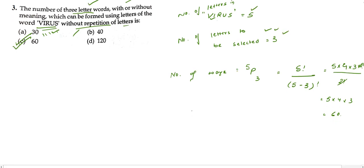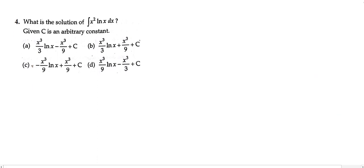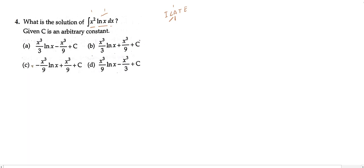Now our fourth question is based on integration. We have ∫x² · ln(x) dx. We have two components, so we will use integration by parts using the ILATE rule. Since L (logarithm) comes before A (algebra), we take ln(x) as our first term. By parts: ln(x) × ∫x² dx − ∫[d/dx(ln x) × ∫x² dx] dx.